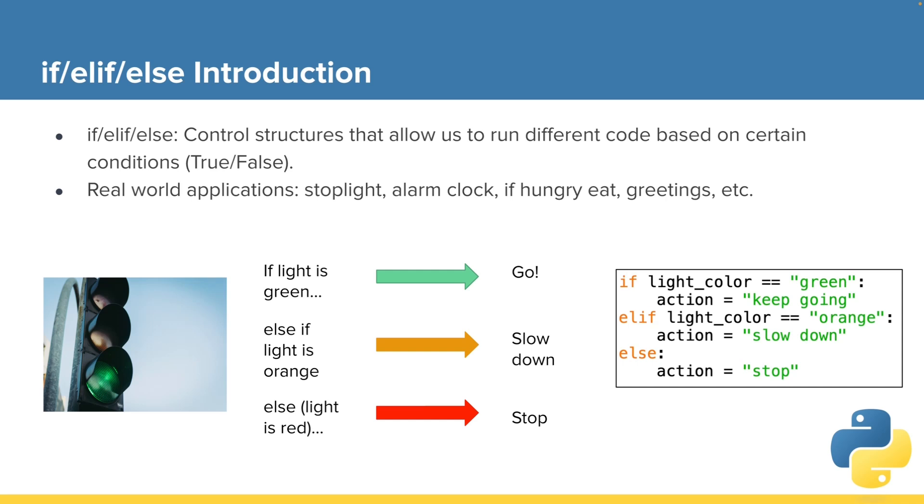And we have a lot of real world applications that we can compare this to. For example, here in America, the stoplights are red, orange, and green. They have three colors on them, usually.